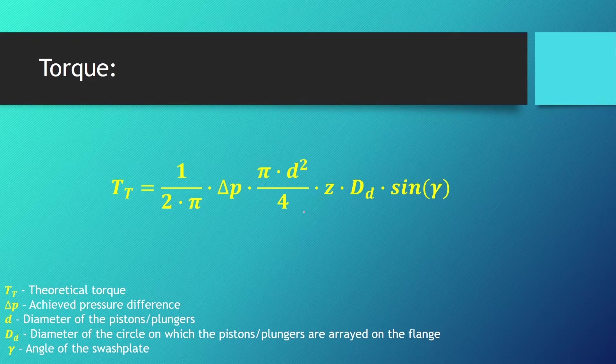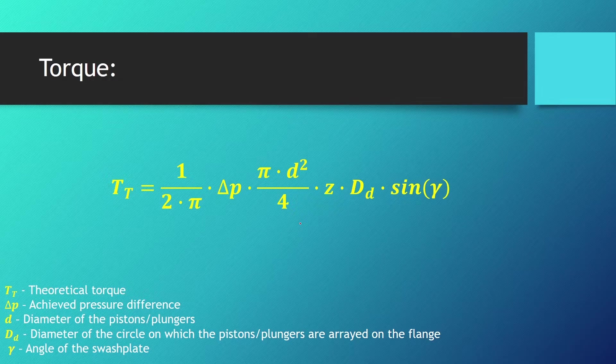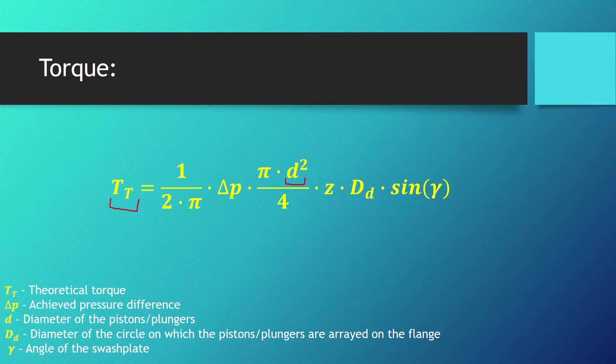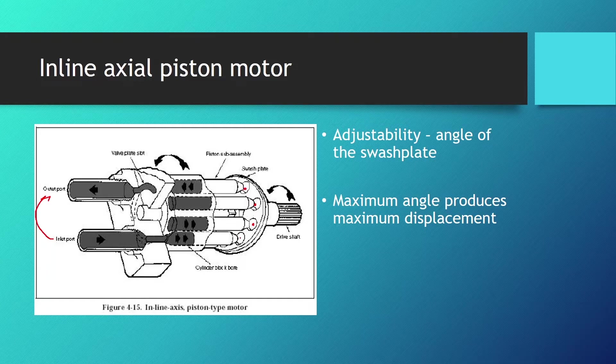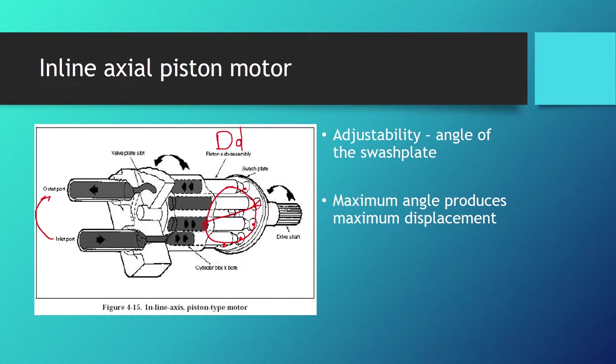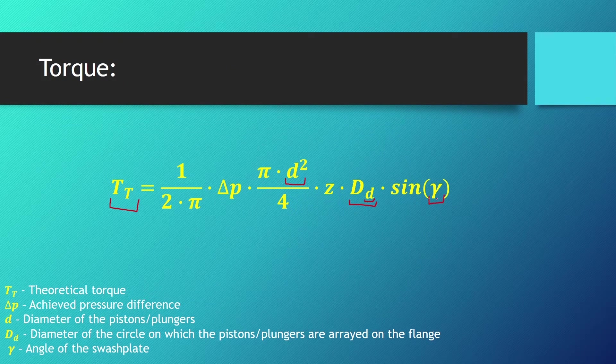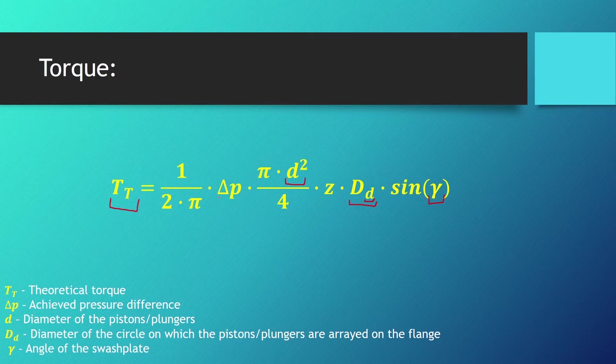If you wanted to calculate the torque of an axial piston motor this is the equation you would use. This is theoretical torque which is larger than the real torque you're going to get. The lower case d is the diameter of the pistons or plungers. Uppercase D with a d in the index is the diameter of the circle on which the pistons or plungers are arrayed on the flange, the circular array. Gamma is the angle of the swash plate. Delta P is the achieved pressure difference.